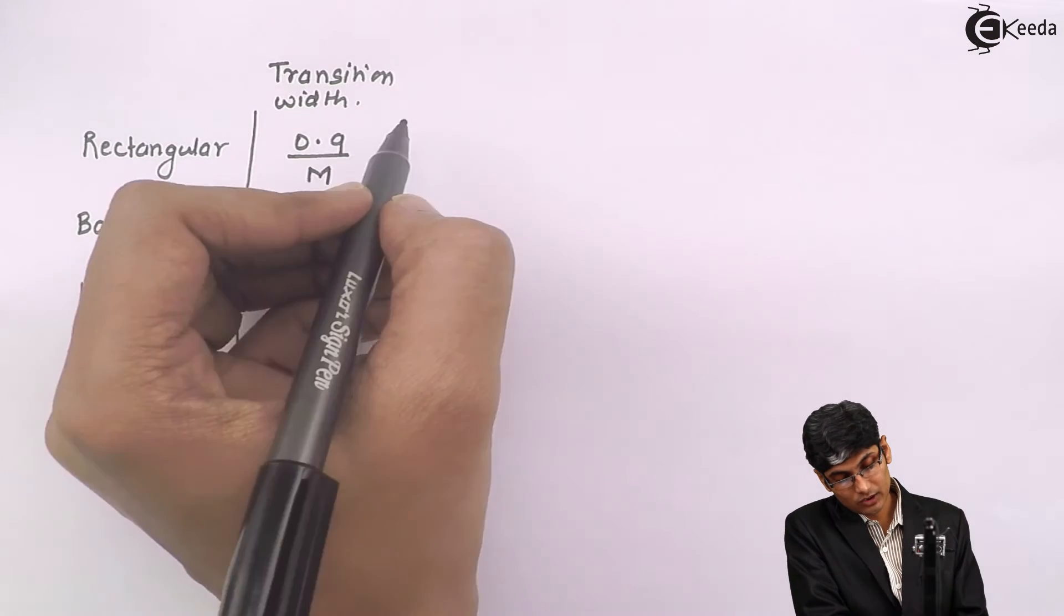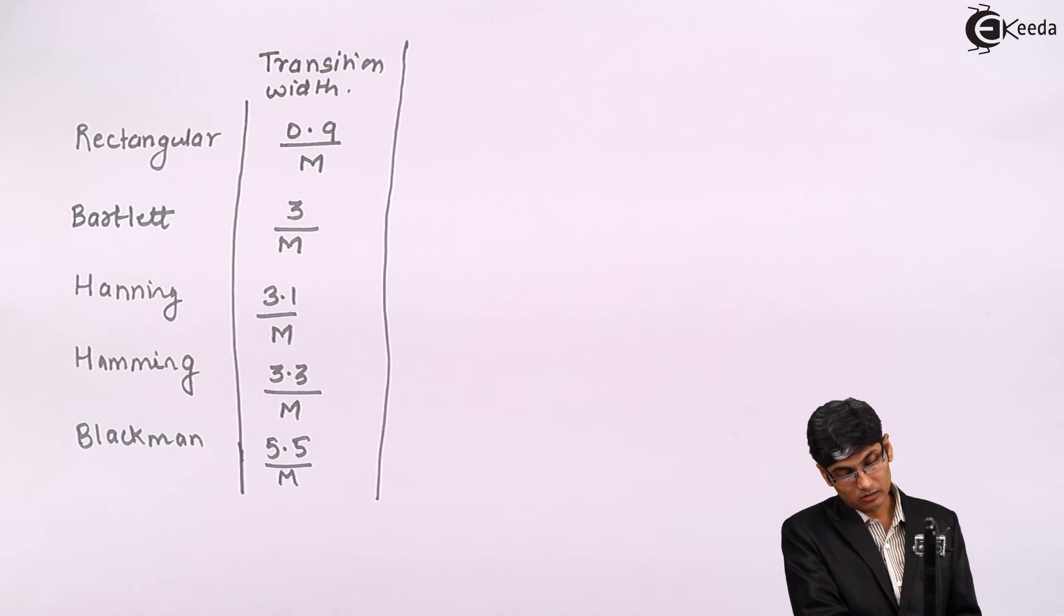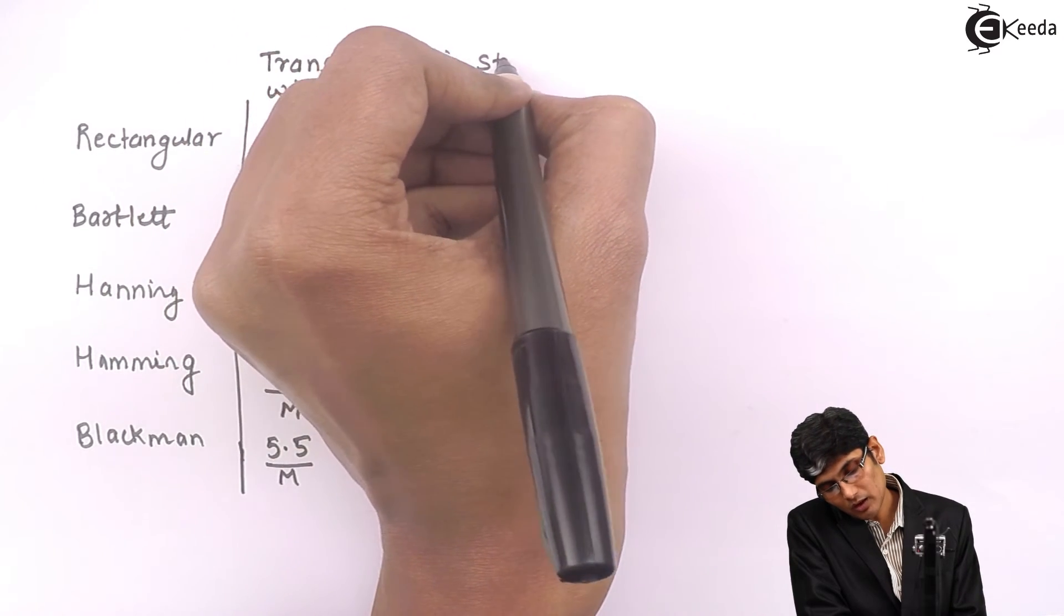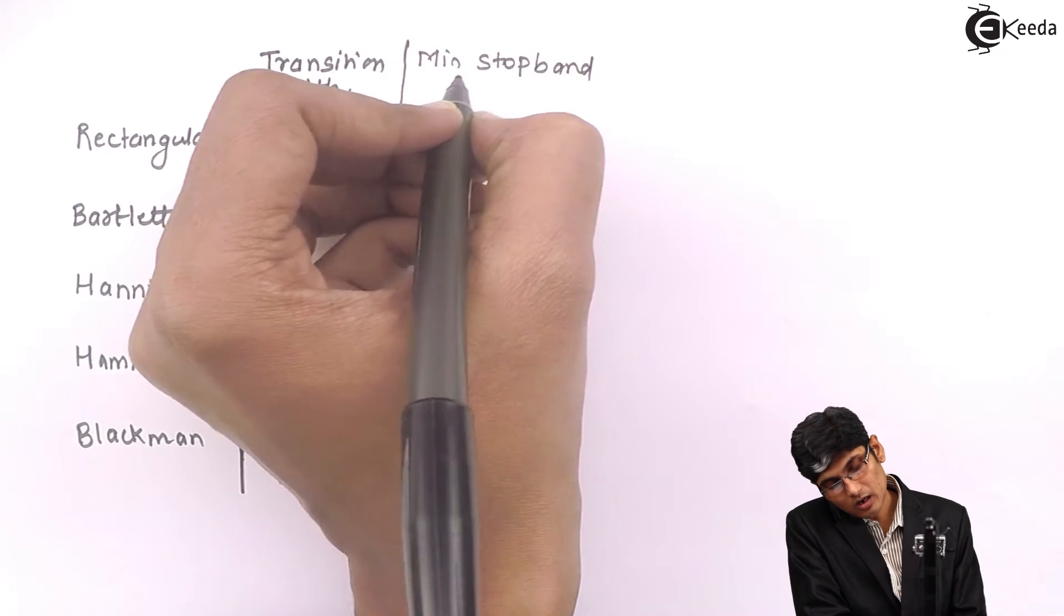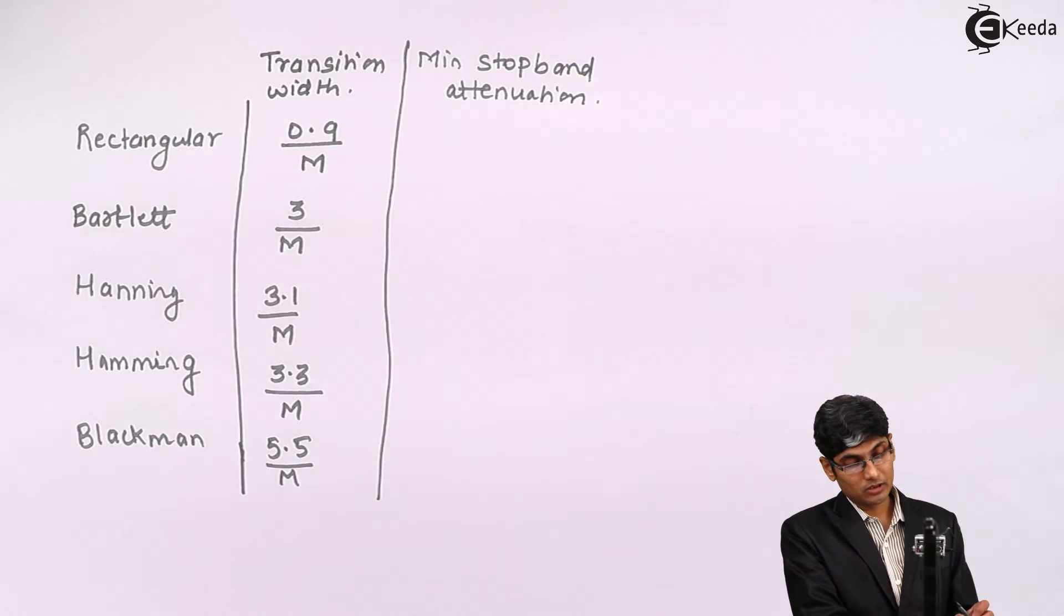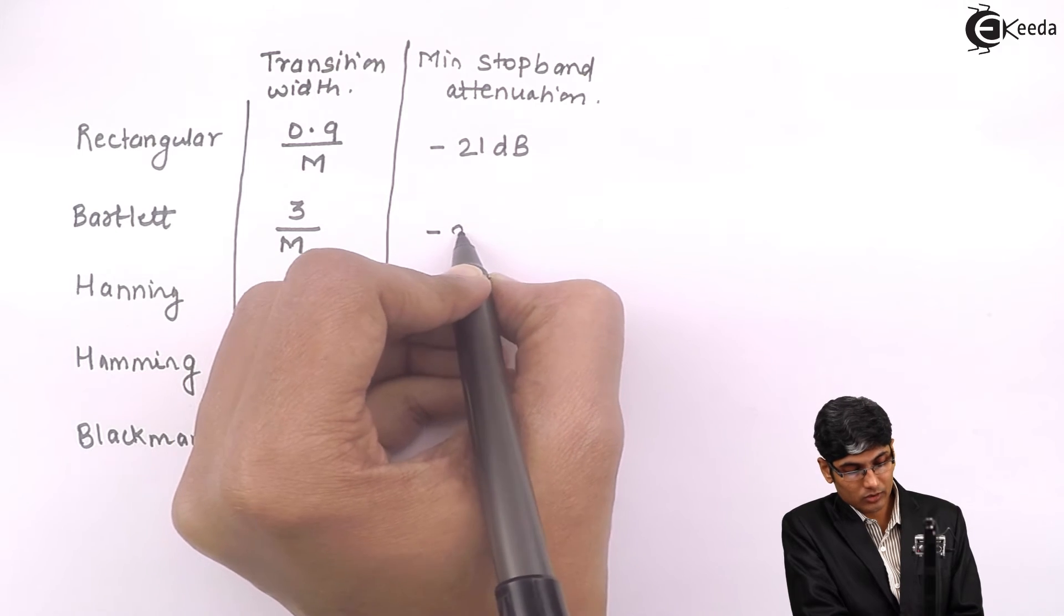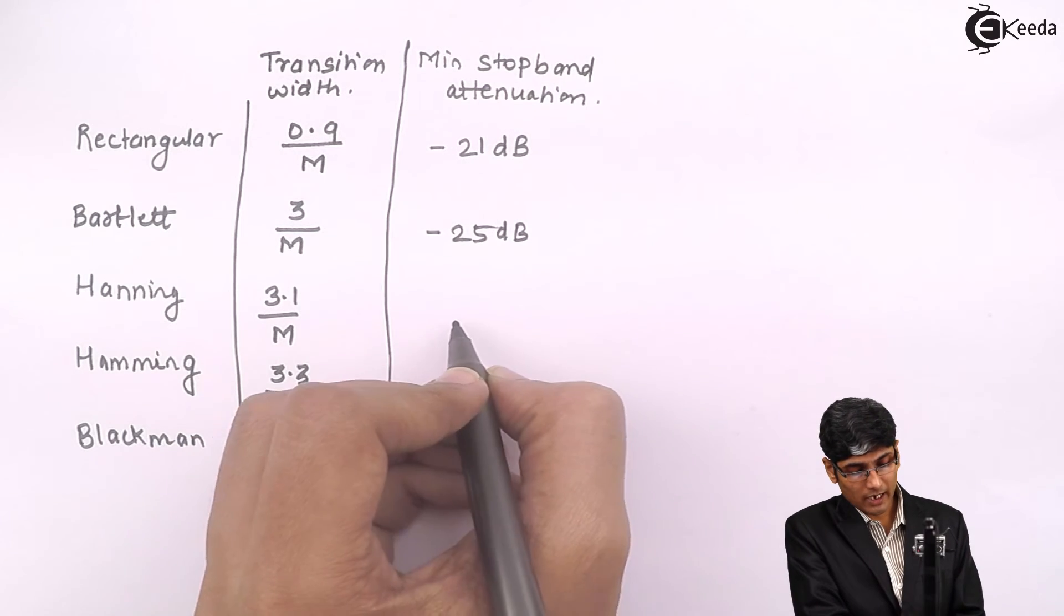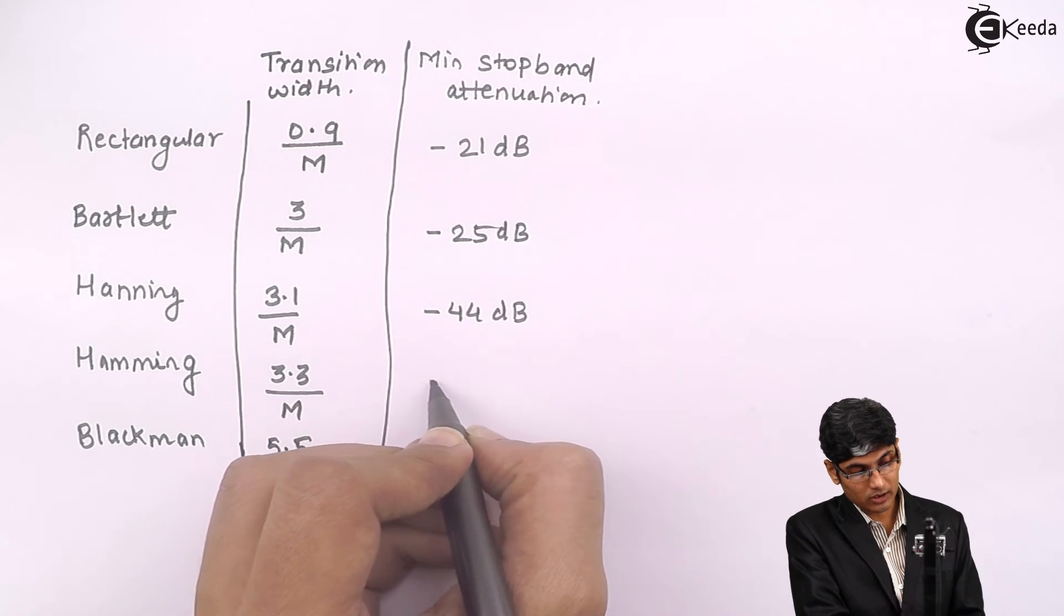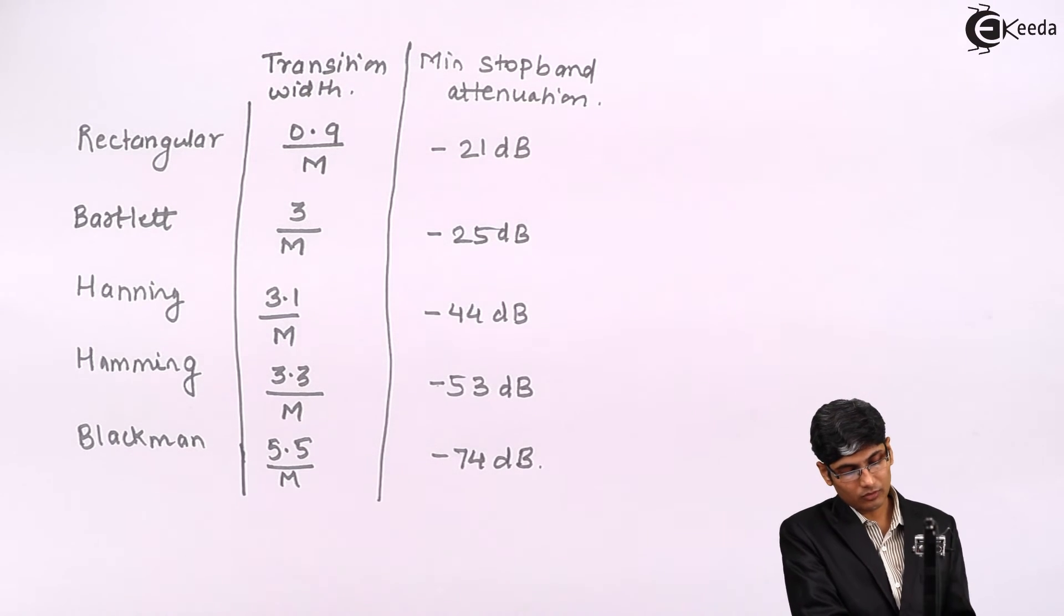Now let us go for the next characteristic, which we call minimum stopband attenuation. For rectangular window it is -21 dB, for Bartlett window it is -25 dB, for Hanning window it is -44 dB, for Hamming window it is -53 dB, and for Blackman it is -74 dB.